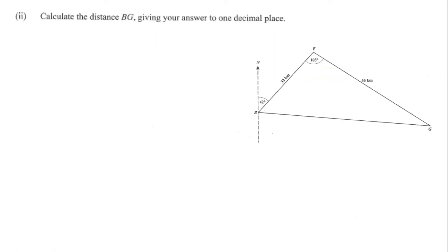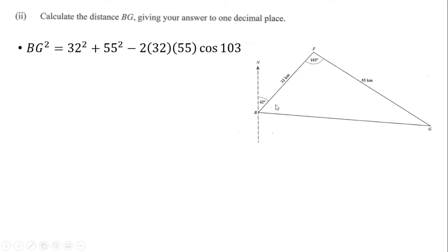Part two asks us to calculate the distance BG to one decimal place. We use the cosine rule. BG² is equal to 32² plus 55² minus 2 multiplied by 32 multiplied by 55 multiplied by cos 103 degrees — that is, the angle opposite the side we're interested in. This follows the cosine rule: a² = b² + c² − 2bc·cosA.